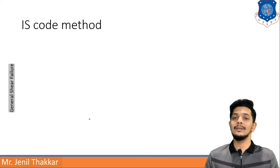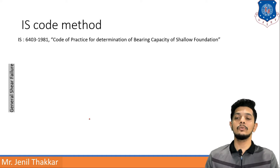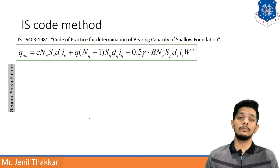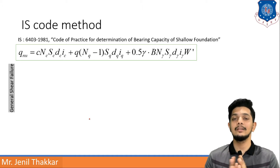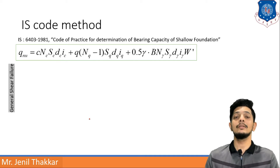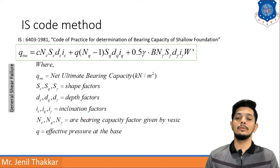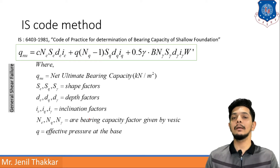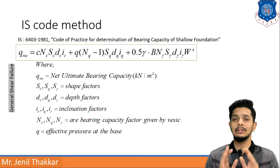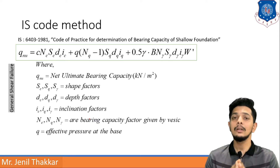IS Code method for general shear failure: IS 6403-1981 is named as the code of practice for determination of bearing capacity of shallow foundations. The formula given in the IS Code is: q_nu = c·Nc·Sc·dc·ic + q(Nq - 1)·Sq·dq·iq + 0.5·γ·B·Nγ·Sγ·dγ·iγ·W dash. This net ultimate bearing capacity formula is long but straightforward once understood.